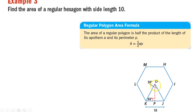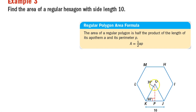We want to find the length of the red dashed line, which is the apothem — what we need to find the area of the polygon using the regular polygon area formula. We can find the perimeter because each side is 10, so the perimeter is 60. We have this length right here because the whole side KJ is 10, therefore the length from K to P is going to be 5.